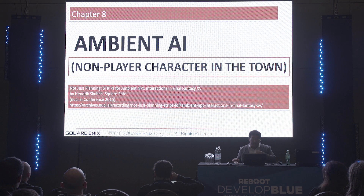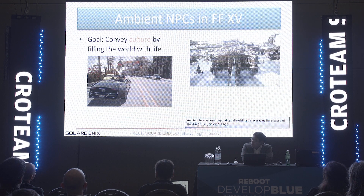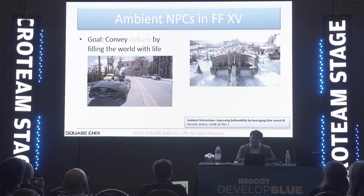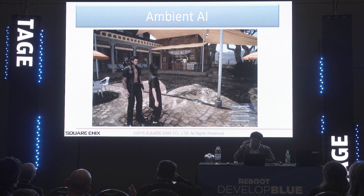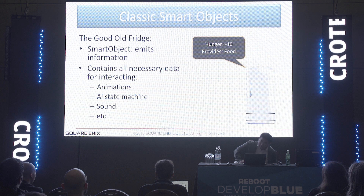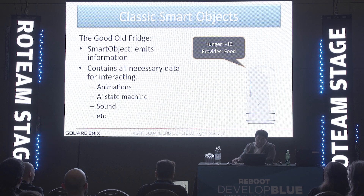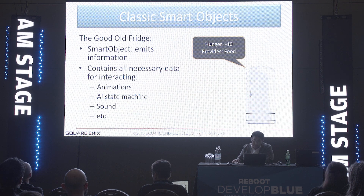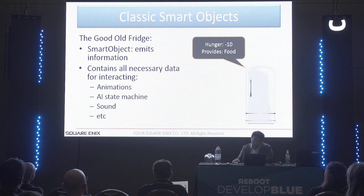Finally, ambient AI — non-player characters in towns. In Final Fantasy XV, there are many cities and villages with many Chocobo, people, and other crowds. Each ambient AI does not have high intelligence as explained for character AI — they have no intelligence. This is a special system called a smart object. The object itself has intelligence to control the characters. For example, every gate has animation, AI state machine, and sound to control characters — to open doors, pick up food, etc. All that information is stored in the objects.